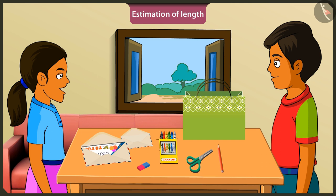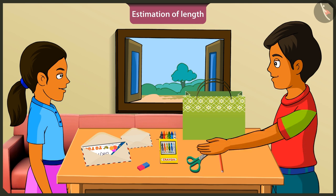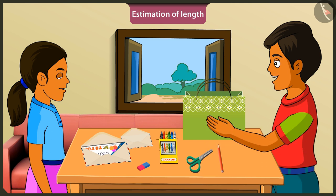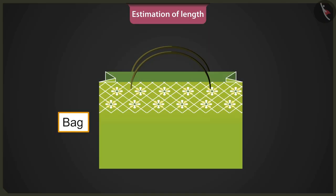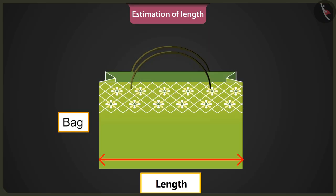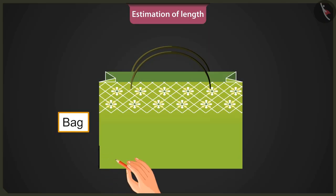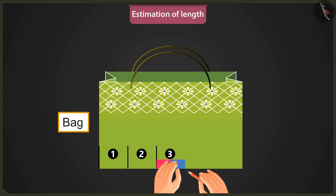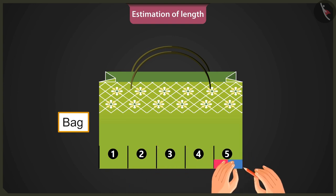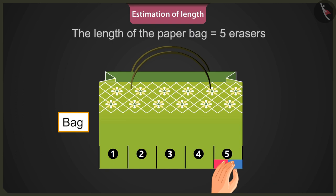Wow, brother, this is really interesting! Now, considering this rubber as a unit of measuring length, determine the length of this paper bag. To measure the bag's length, place the rubber at one end of the bag. It will be one, two, three, four, and five. The length of this paper bag is five erasers.